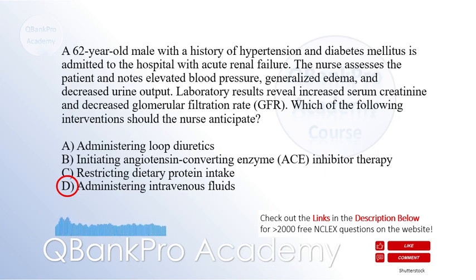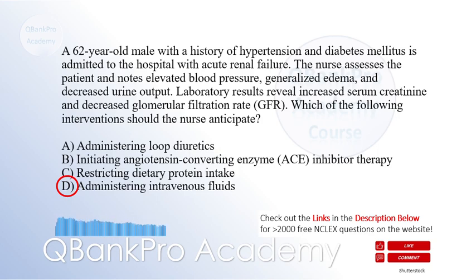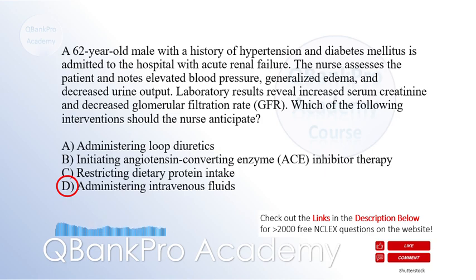Explanation: Acute renal failure is characterized by a sudden decline in kidney function, leading to fluid and electrolyte imbalances. The priority intervention is to restore and maintain adequate fluid volume to support renal perfusion and promote diuresis. Administering loop diuretics may be necessary if the patient has fluid overload despite fluid administration, but it is not the initial intervention.